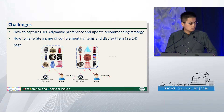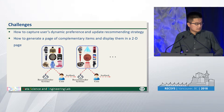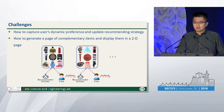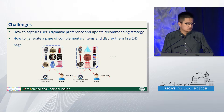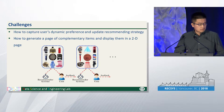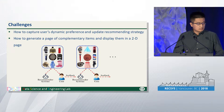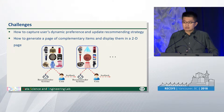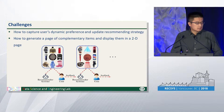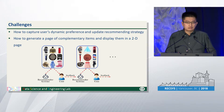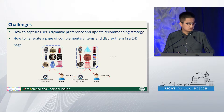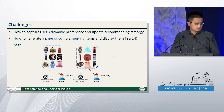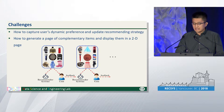This example suggests two key challenges when we model this kind of interaction for Recommender Systems. First, how to capture the user's dynamic preference and update the recommending strategy according to users' real-time feedback. And second, how to generate a page of diverse and complementary items and display them in a two-dimensional page.